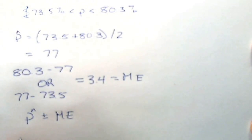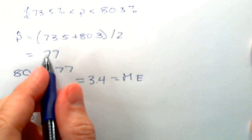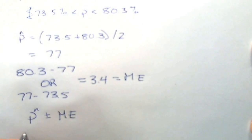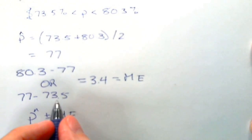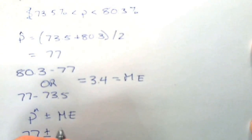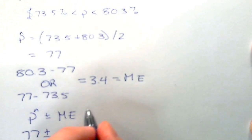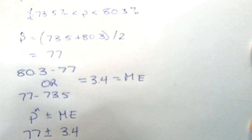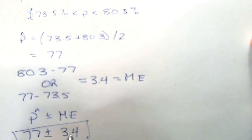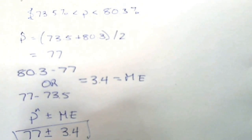So the final solution is: p-hat plus or minus the margin of error equals 77 plus or minus 3.4. Thank you.